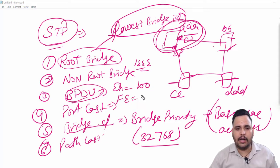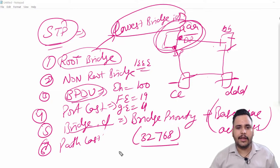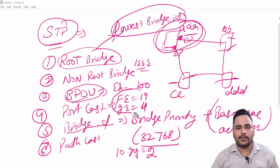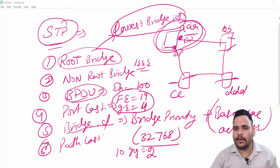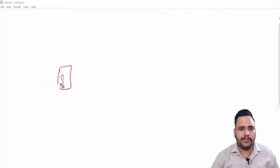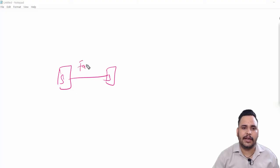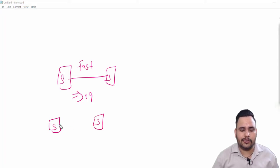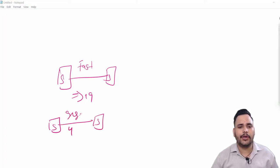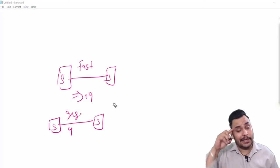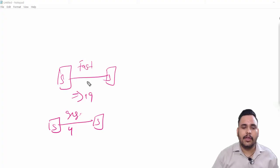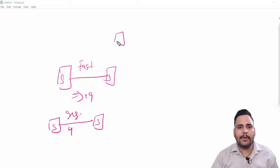The port cost values are: Ethernet port cost is 100, Fast Ethernet cost is 19, Gigabit Ethernet cost is 4, and 10 Gigabit Ethernet is 2. By default we are using switches with Fast Ethernet and Gigabit Ethernet. If your switch is connected to another switch with Fast Ethernet, the cost is 19. If connected with Gigabit Ethernet, the cost is 4. The lower the cost, the better the path.